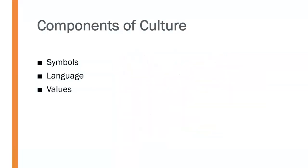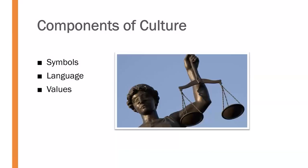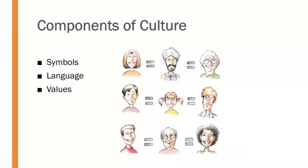Every culture also has its own set of values. Here in the United States, some of the values we espouse include liberty, justice, equality, and fairness. Those are the values we claim to hold dear here. Every culture has its own set of values that it clings to and that it feels represents it.